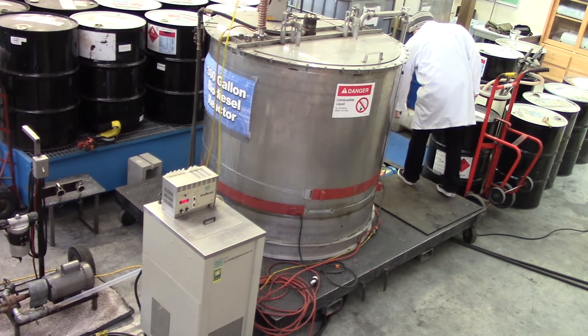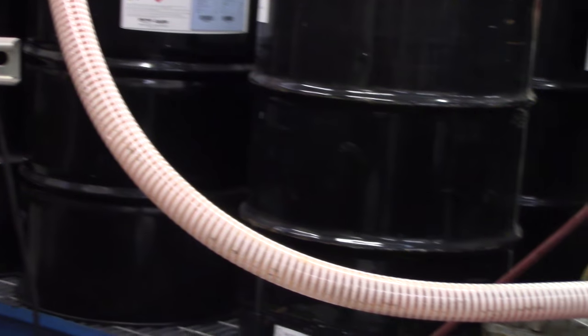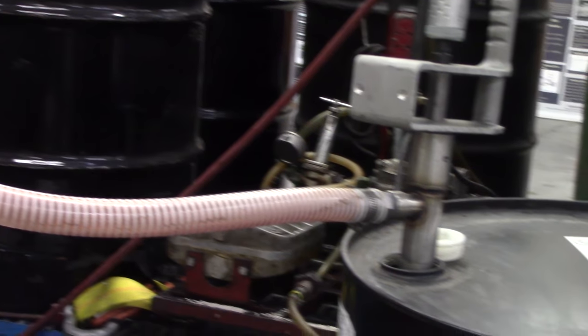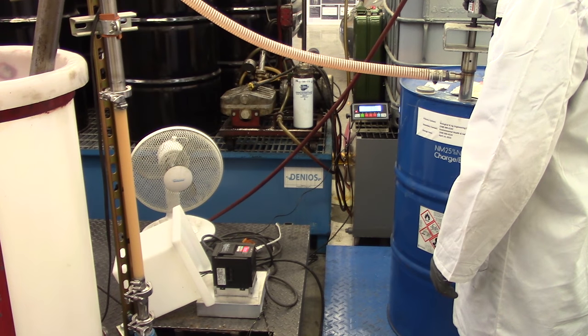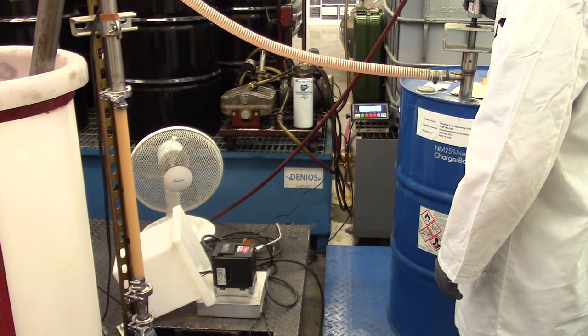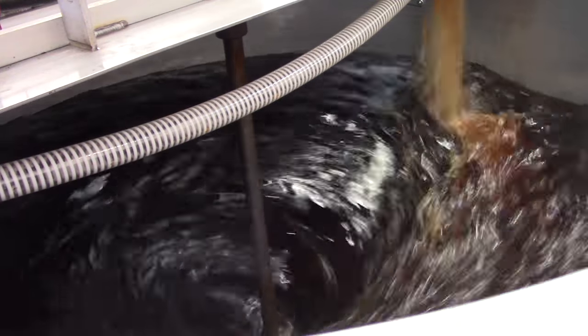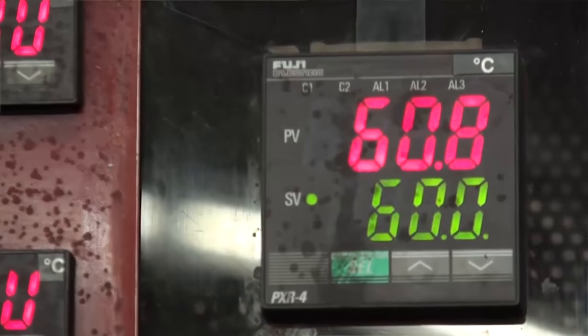With suitable feedstock in the reactor, the reactor lid is closed and we carefully add 80% of the methanol, which is extremely toxic and highly flammable, then 80% of the sodium methoxide, which is the catalyst we use for bulk production. The reaction mixture is then mixed vigorously for at least one hour at 55 to 60 degrees centigrade.